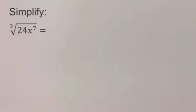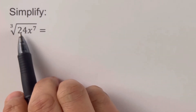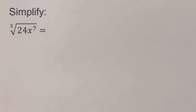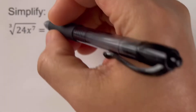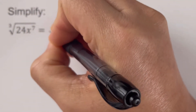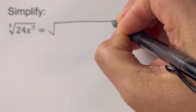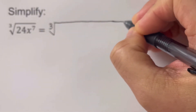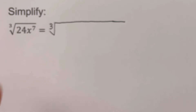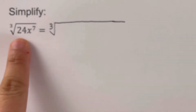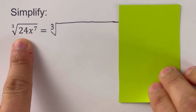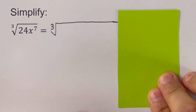Going back to the problem, in order to simplify this cube root expression with variables, the first step is to expand the given expression. So I'm going to write the radical symbol — that is cube root, so we write 3 here. The first step is to expand it. We're going to start with 24 and determine its prime factors.